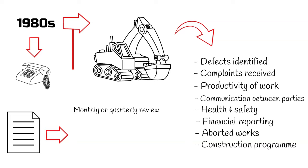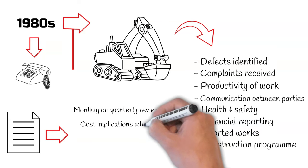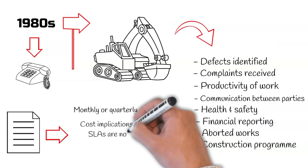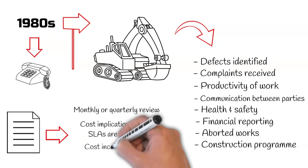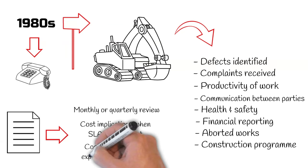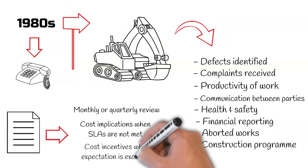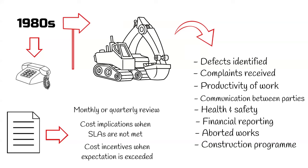If performance falls below a minimum requirement, there could be cost implications for the service provider. However, you may find that when performance exceeds expectations, there are cost incentives for the service provider. Carrot and stick is a good metaphor to describe this type of mechanism — it gives the service provider an extra level of motivation to ensure good performance under a contract.